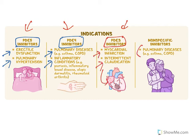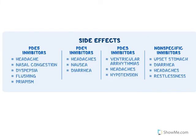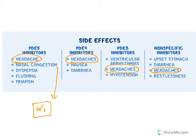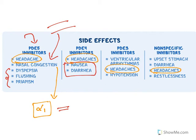Regarding side effects: a common side effect across all PDE inhibitors is headache, because increased vasodilation increases blood supply to the head. Nasal congestion also occurs with vasodilation, since alpha-1 agonists (decongestants) work by vasoconstriction, and vasodilation has the opposite effect. PDE-5 inhibitors specifically cause dyspepsia, flushing, and priapism. PDE-4 inhibitors cause nausea and diarrhea along with headache. PDE-3 inhibitors can cause ventricular arrhythmias and hypotension due to vasodilation.